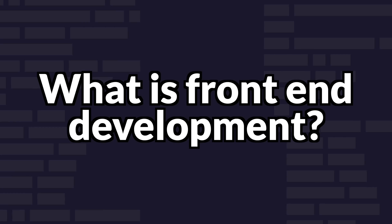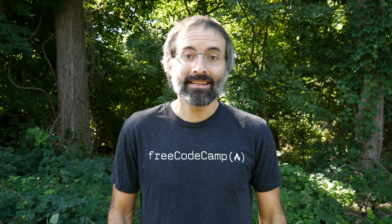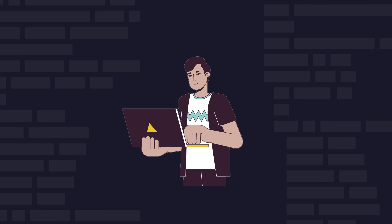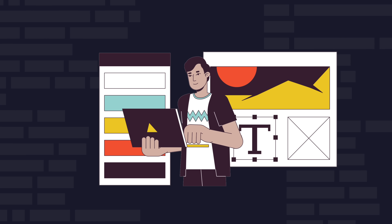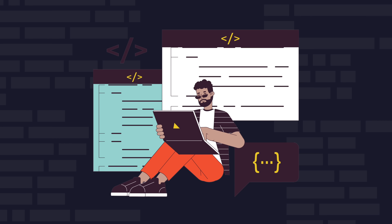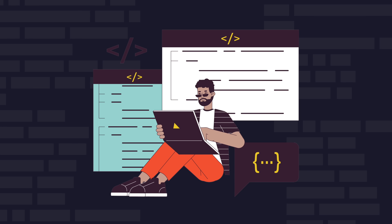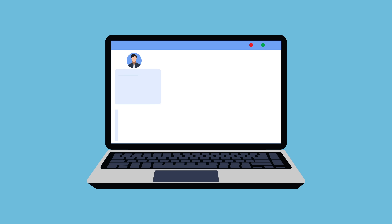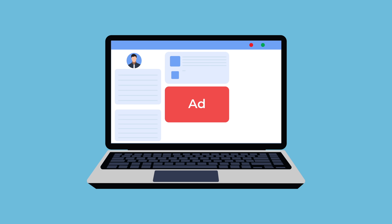I'll start with explaining what front-end development actually is. Front-end development is like designing the face of a website or app. It's all about how things look and feel when you use them. While back-end developers make sure everything works behind the scenes, front-end developers focus on what you see and interact with, making sure it's easy to use and looks good on any device. In short, front-end developers turn designs into live websites and apps that people can use.